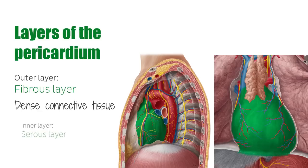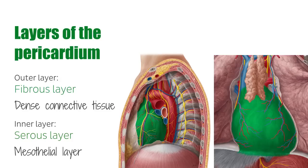The inner layer of the pericardium is known as the serous layer, or the parietal layer, and is in direct contact with the pericardial fluid. It consists of a mesothelial layer, simple squamous epithelium, which reflects onto the roots of the great vessels, and runs directly over the external surfaces of the heart, as the epicardium or visceral pericardium.